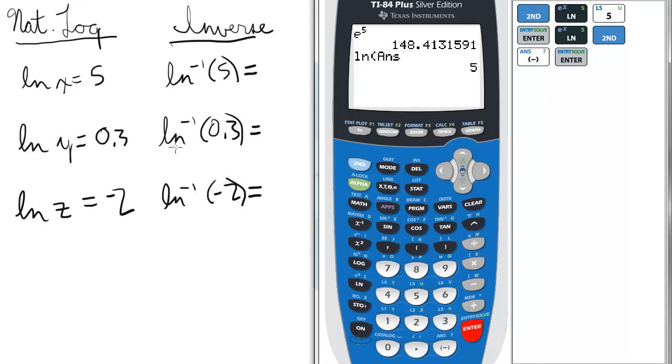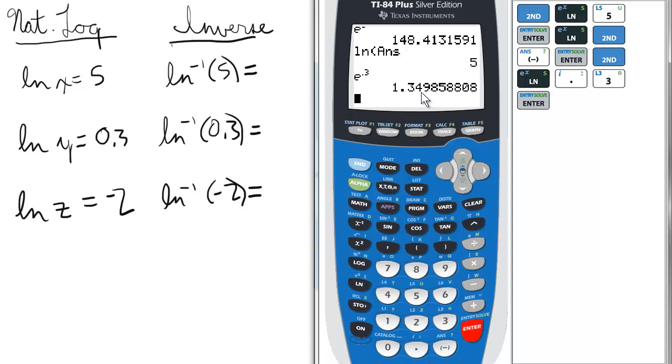In the inverse natural log form, it'd be ln negative 1 of 0.3. So to access that function on our calculator, we press 2nd and ln, we get the e raised to the button. So e to the 0.3 equals 1.3498.